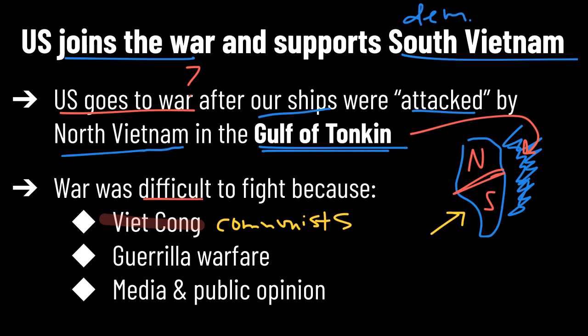We are also finding this very difficult because of what's called guerrilla warfare. This is what the Viet Cong and the North Vietnamese were doing — they were hitting us with really surprise attacks. They were using the jungle, which they knew so well because this is their country, to hide and to move without the US and South Vietnam necessarily seeing. At any time you could be hit and have no idea where things were coming from.